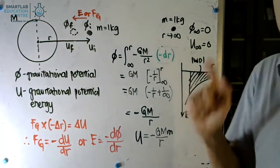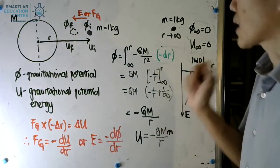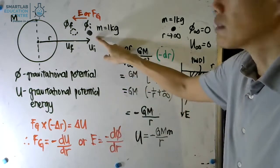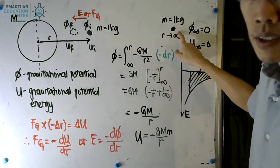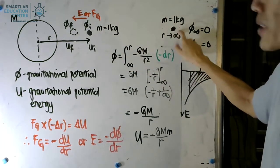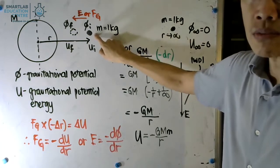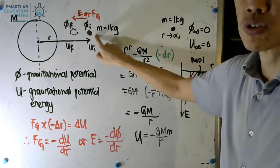So let's take a look at gravitational potential. Gravitational potential of a point is defined as the work done required to move a unit mass from infinity to that point concerned by an external force.